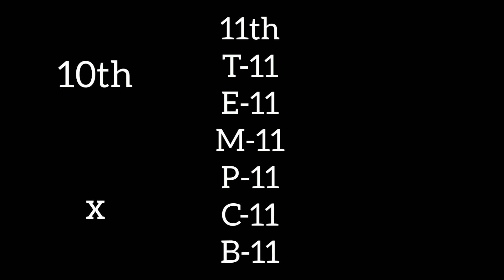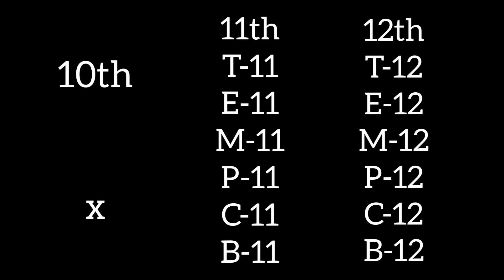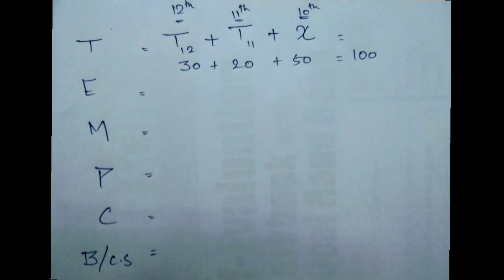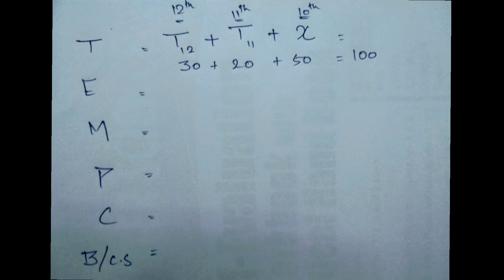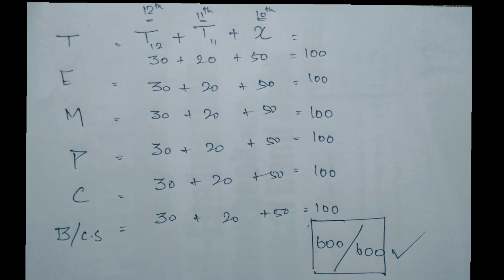Now we have to calculate the individual subject marks. Let 10th marks be X, 11th marks be T11, E11, M11, and 12th marks be T12, E12, M12. For easy calculation, the final marks for each subject — for example Tamil — is T12 plus T11 plus X. So: 12th marks 30 + 11th marks 20 + 10th marks 50 equals 100. Calculate each subject this way, add all 6 subjects to get a total of 600.